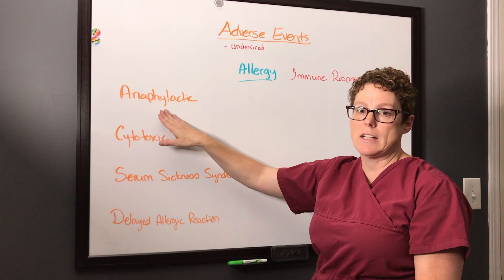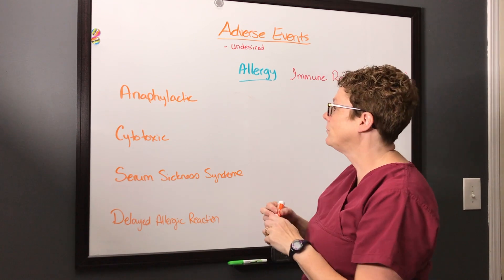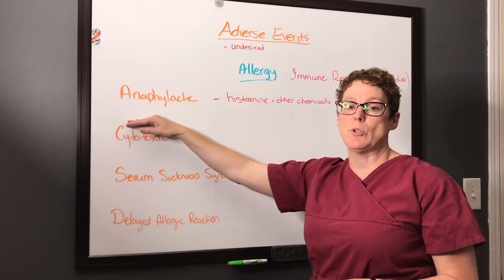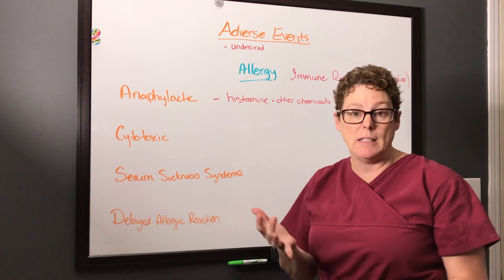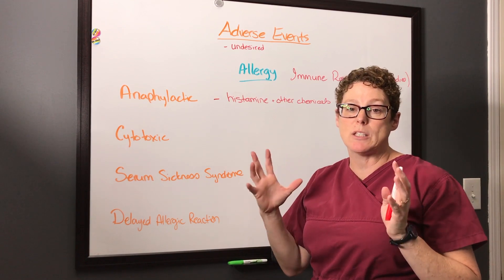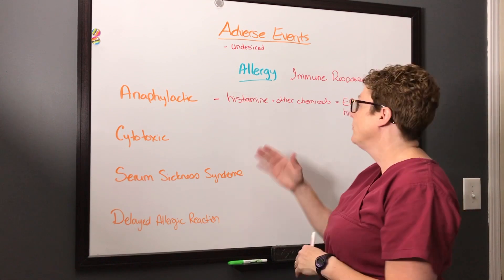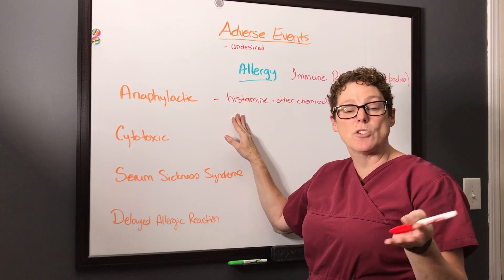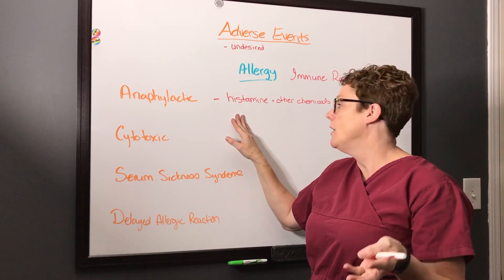Anaphylactic is the most serious type — it's a life-threatening reaction to a stimulus like bee stings. Histamine and other chemicals are released at the site causing immediate swelling. You may also notice itching, rashes, and low blood pressure. These need to be treated right away — this is where you hear about epinephrine for those with life-threatening allergies to peanuts, shellfish, and similar antigens.